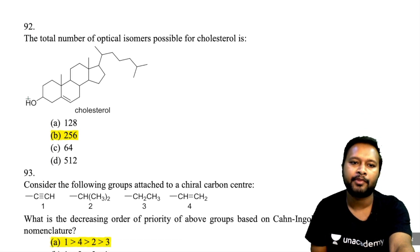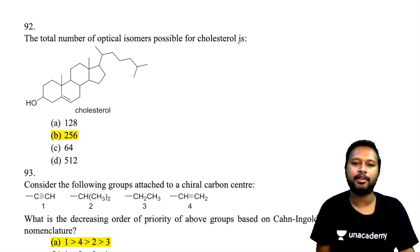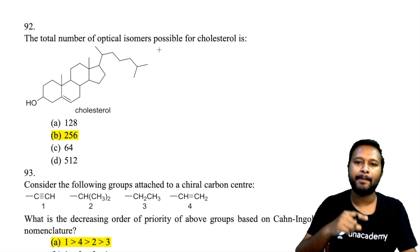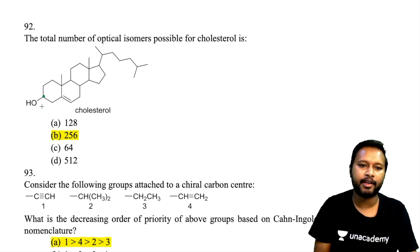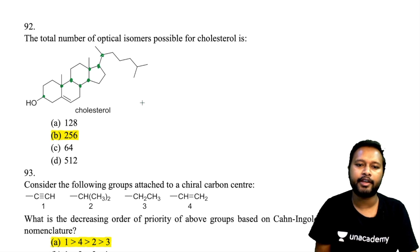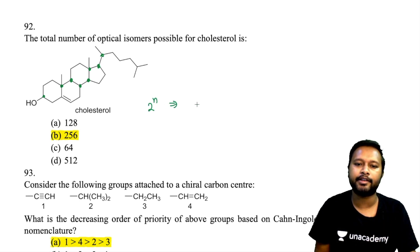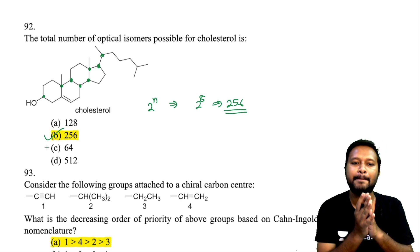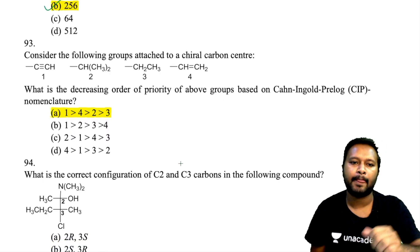Question 92 asks for the total number of optical isomers in polystyrene (or the given compound). Counting chiral centers: there are 8 chiral centers (the terminal position has two identical groups, so it is not chiral). Using the formula 2ⁿ with n = 8, that gives 2⁸ = 256 optical isomers. Option B is correct.